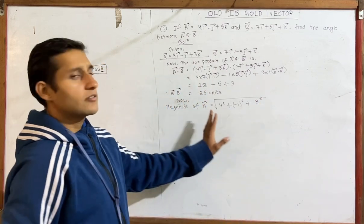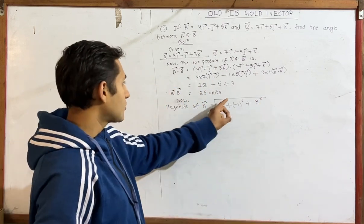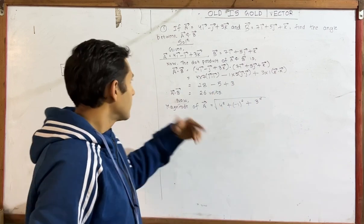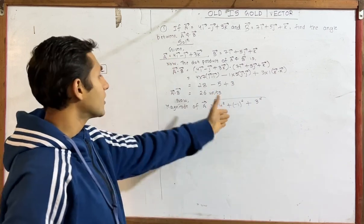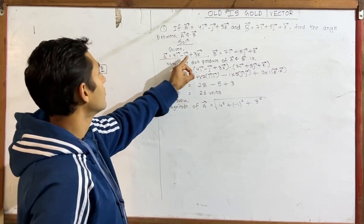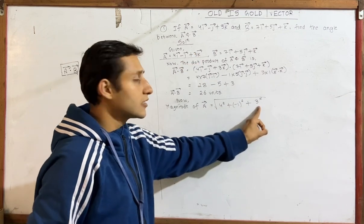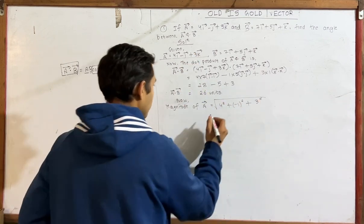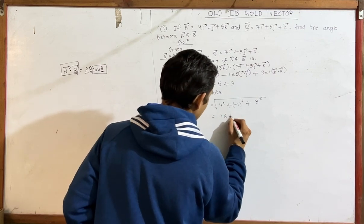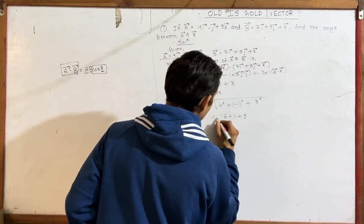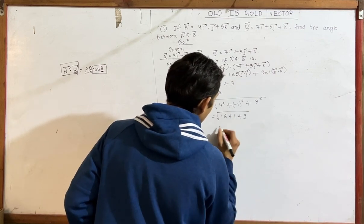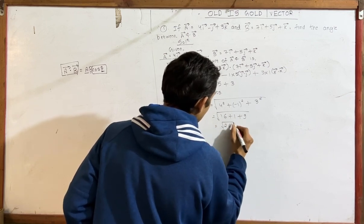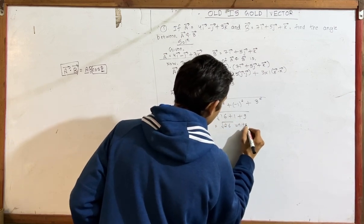Magnitude calculation is simple: x squared plus y squared plus z squared, then take the root. So magnitude of A vector equals root of 4 squared plus 1 squared plus 3 squared, which is root of 16 plus 1 plus 9, giving root of 26.